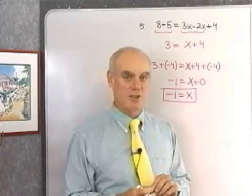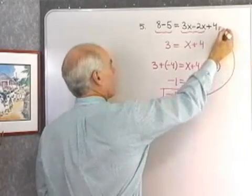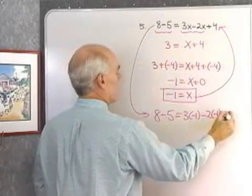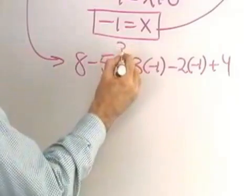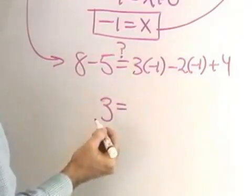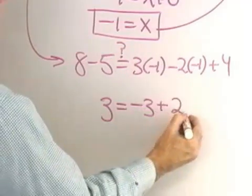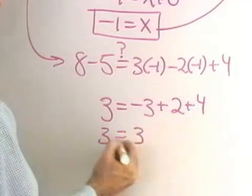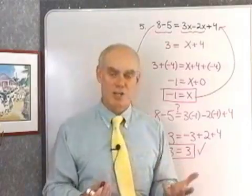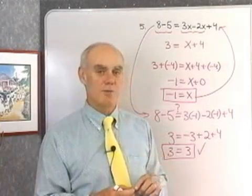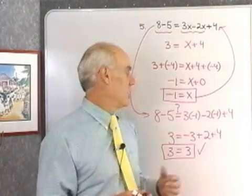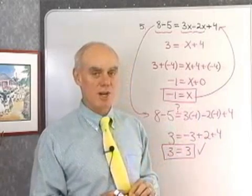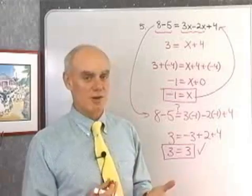Before we leave this problem, let's check the solution in the original equation. I'll take x equal negative 1, put it back in: 8 minus 5 is equal to 3 times negative 1, minus 2 times negative 1, plus 4. 8 minus 5 is 3. 3 times negative 1 is negative 3; negative 2 times negative 1 is positive 2, plus 4. So 3 equals negative 3 plus 2, which is negative 1, plus 4 is 3. Sure enough, I get a true statement — the solution checks. You want to check solutions on an exam: take your solution, substitute it back for the variable in the original equation, simplify each side, and see if you get a true statement. True statement means correct solution; false statement means there's a mistake in your work.